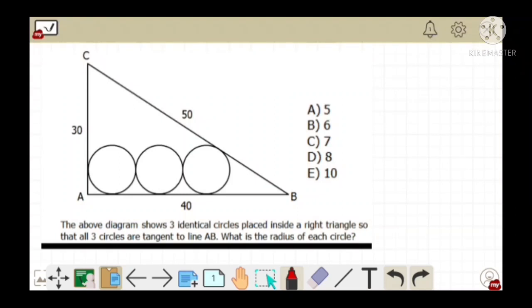Hello everybody, today again we are back with a question. The above diagram shows three identical circles placed inside a right-angled triangle so that all three circles are tangent to line AB. What is the radius of each circle? We need to determine the radius of this small circle inscribed inside this right-angled triangle.